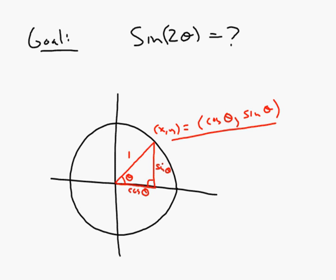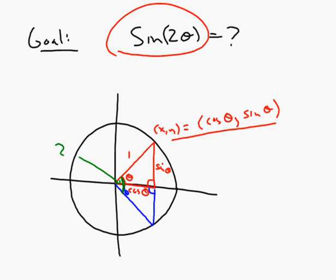Our goal is to get an expression for the sine of 2 theta. When I look at this picture, I don't see 2 theta anywhere — I just see theta. But I can easily draw a second triangle. I'm going to make this triangle a reflection of the red triangle in the x-axis. When we reflect triangles, the image is congruent to the original, so this angle in here is also theta. Now I see the whole green angle is 2 theta.